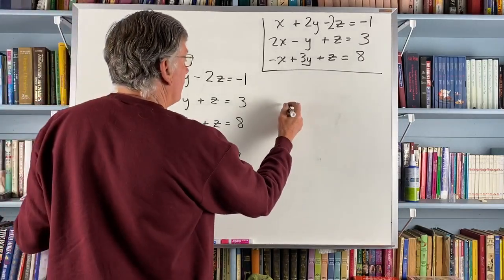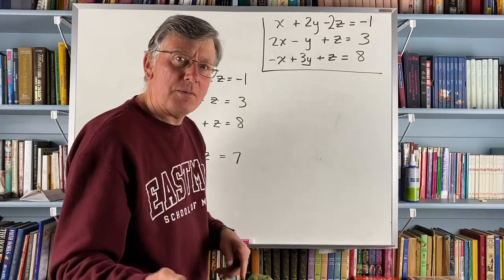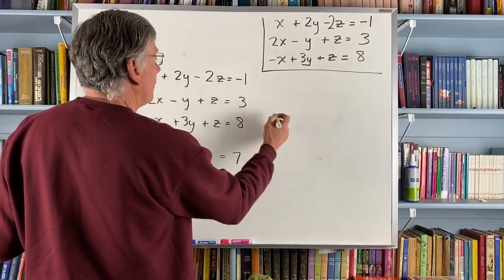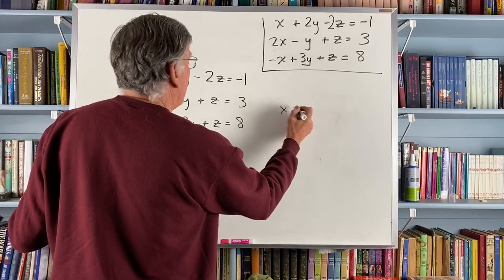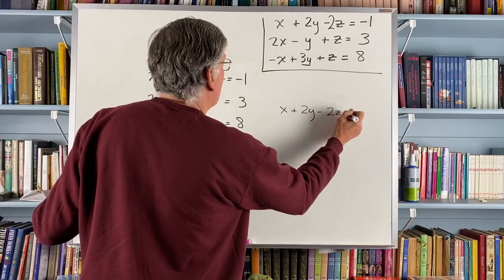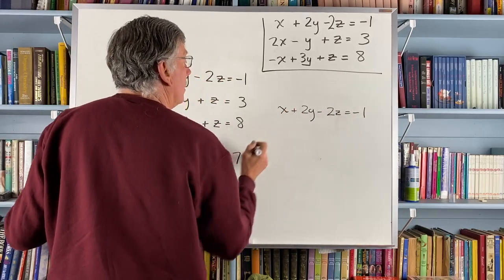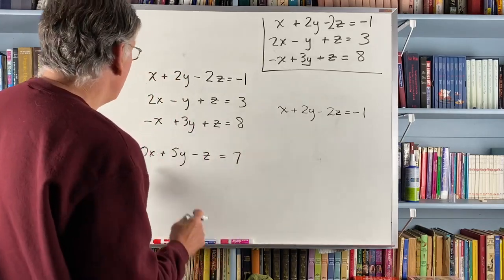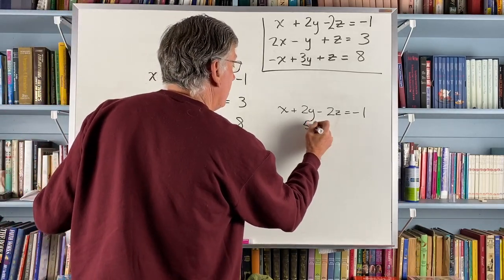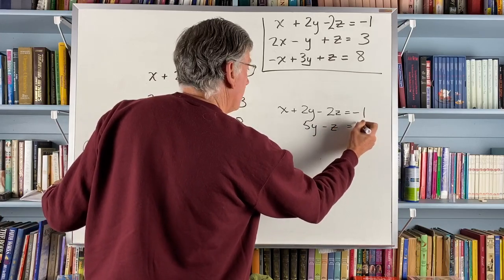So over here, I'm just going to, it's maybe a little extra writing, but I just want to make sure I keep my bookkeeping straight. I'm going to write the first equation again, x plus 2y minus 2z equals minus 1. Now I'm going to write this equation here, 5y minus z is equal to 7.